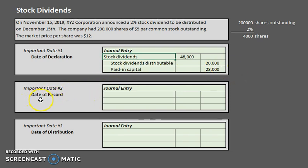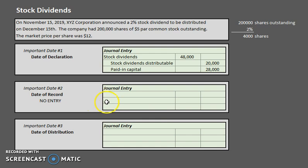Our next date is the date of record. Just like with cash dividends, the date of record requires no journal entry. This date simply tells us who is going to receive the dividends — whoever owns the stock as of that date. There is no monetary change, so no journal entry is required.